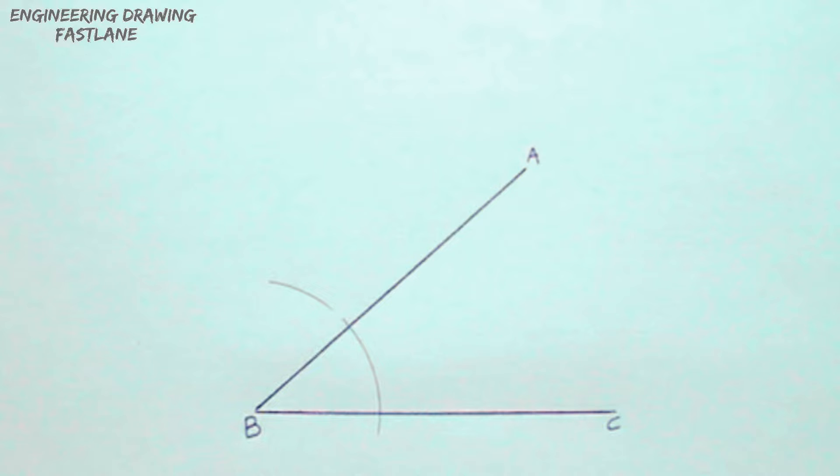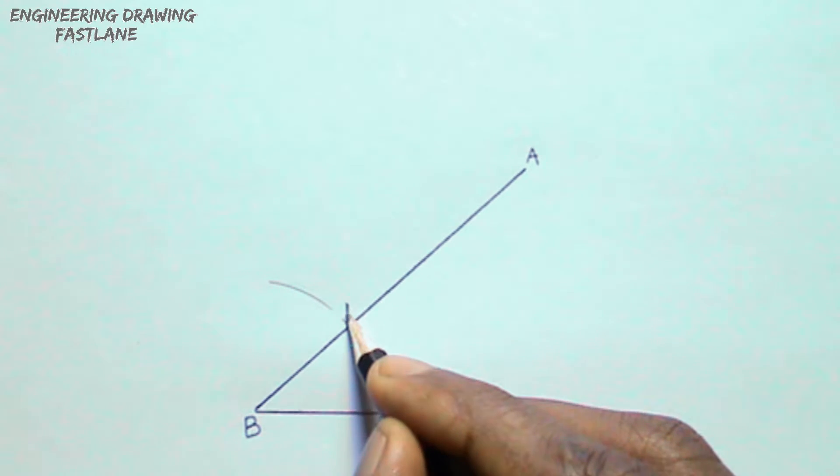The point where the arc cut through line AB should be called D and the point where the arc cut through line BC should be called E.